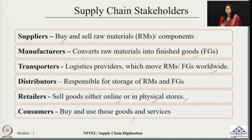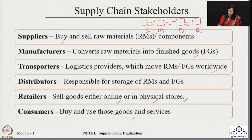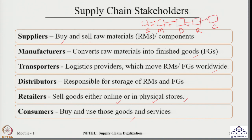The process we have discussed starts from suppliers to manufacturers; the transporters are responsible for moving products between players, then to the distributors and finally to the retailers. The retailers are the ones connected with customers, and customers can get their products directly from the retailers. This flow is called the forward supply chain.